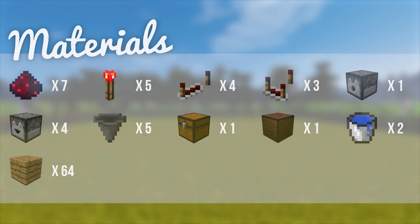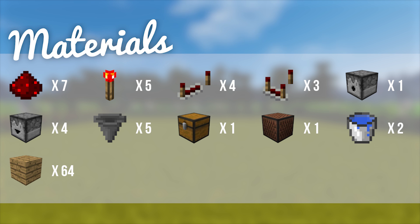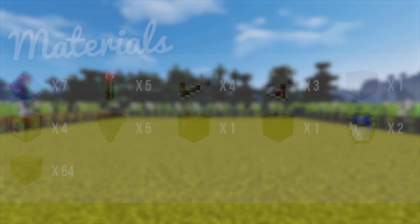So the materials that you are going to need is seven redstone dust, five redstone torches, four redstone repeaters, three redstone comparators, one dispenser, four droppers, five hoppers, one chest, one note block, two buckets of water, and 64 blocks of your choice.